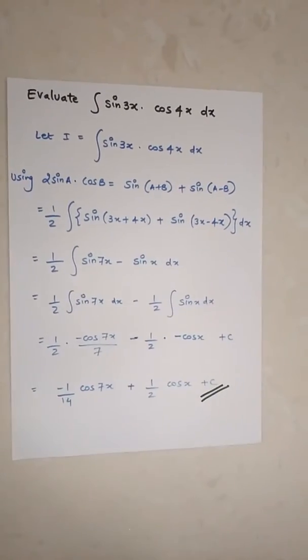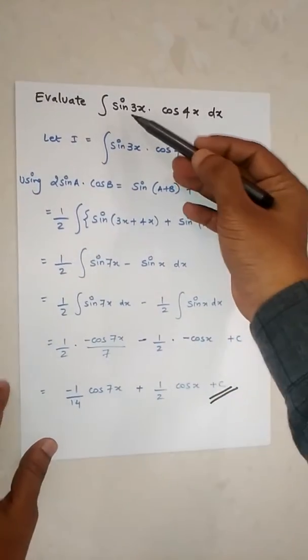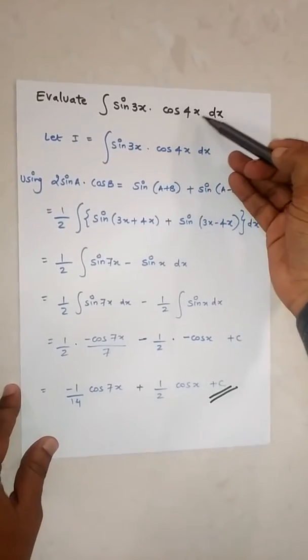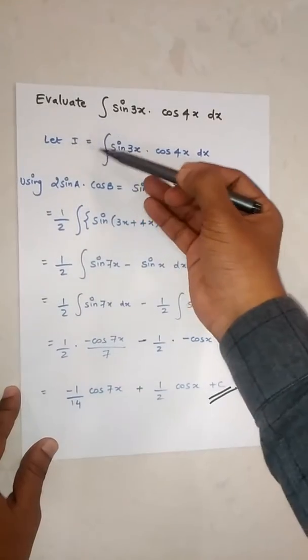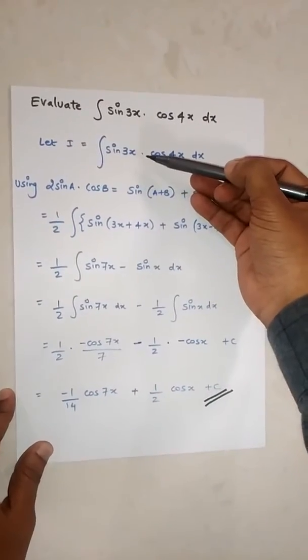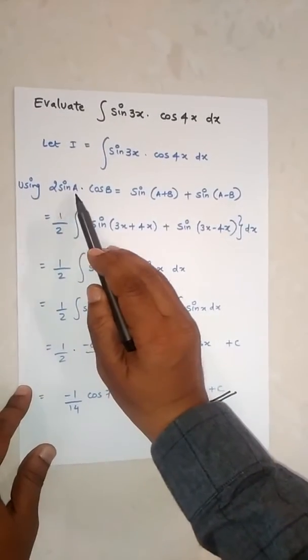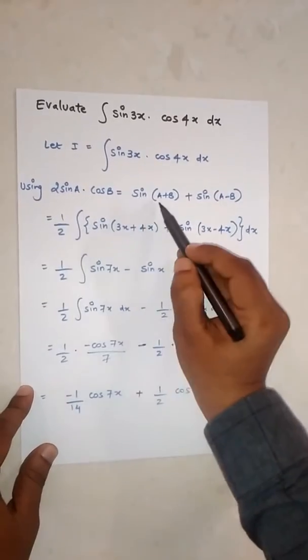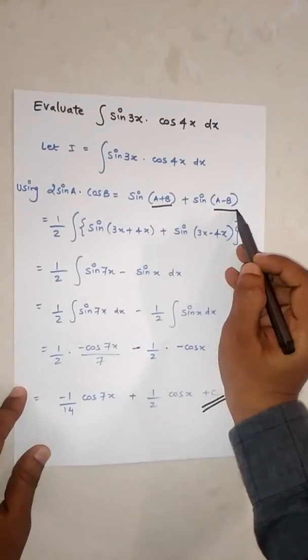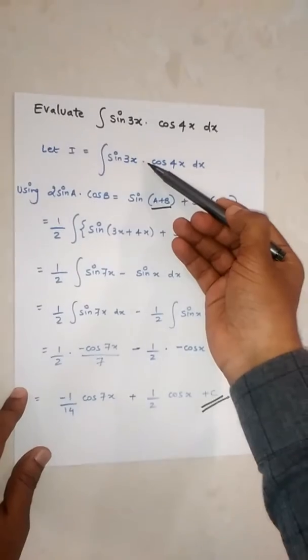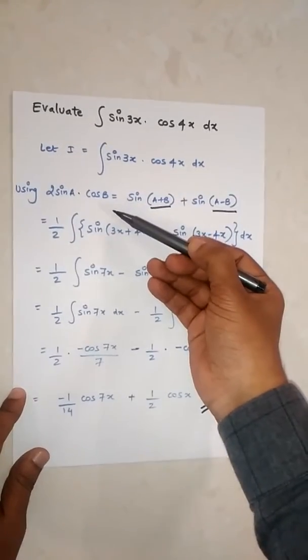Hello friends, today's topic is integration. Evaluate sin(3x) cos(4x) dx. Let I equal the question as it is. We have one formula: 2 sin(a) cos(b) equals sin(a+b) plus sin(a-b). In this question, multiply and divide by 2 so we can use the formula.